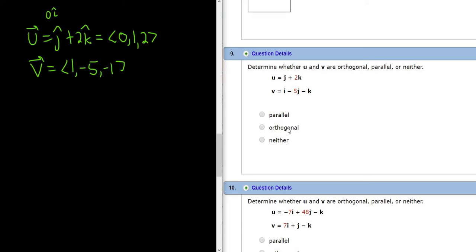Okay, so to find out if they're orthogonal, you have to compute the dot product. And if it's 0, then you know they're orthogonal. So let's go ahead and start by doing that first.